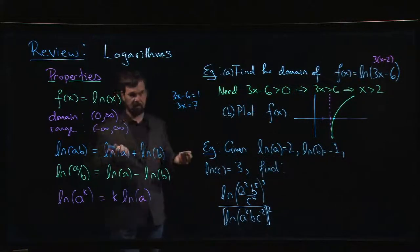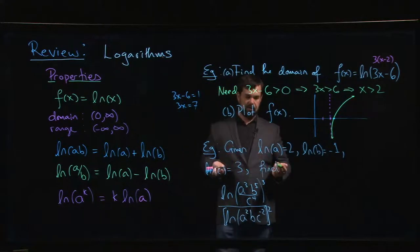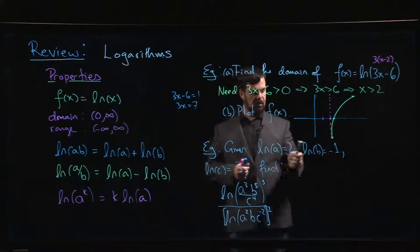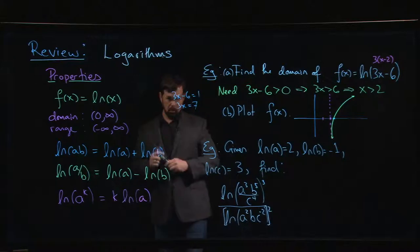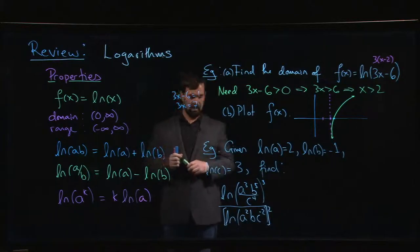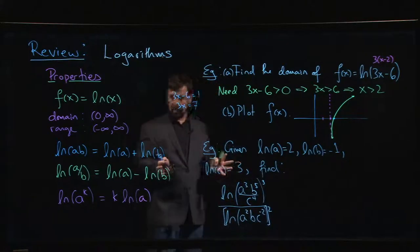Notice it is the same general shape, just a transformation of the original. Now here's an algebraic problem, working with the properties. We're given three values: the natural log of a is 2, log of b is minus 1, log of c is 3. We want to find the value of this ugly looking expression here.